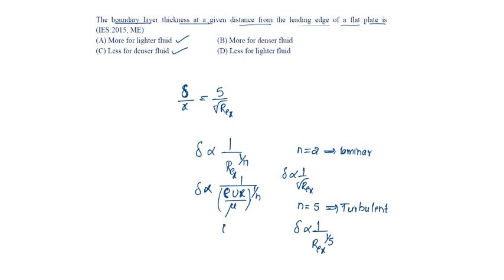Rho for a lighter fluid is less, therefore delta increases, and also mu is more, so delta increases. So more for lighter fluid and vice versa, it is less for denser fluid. Option A and C.